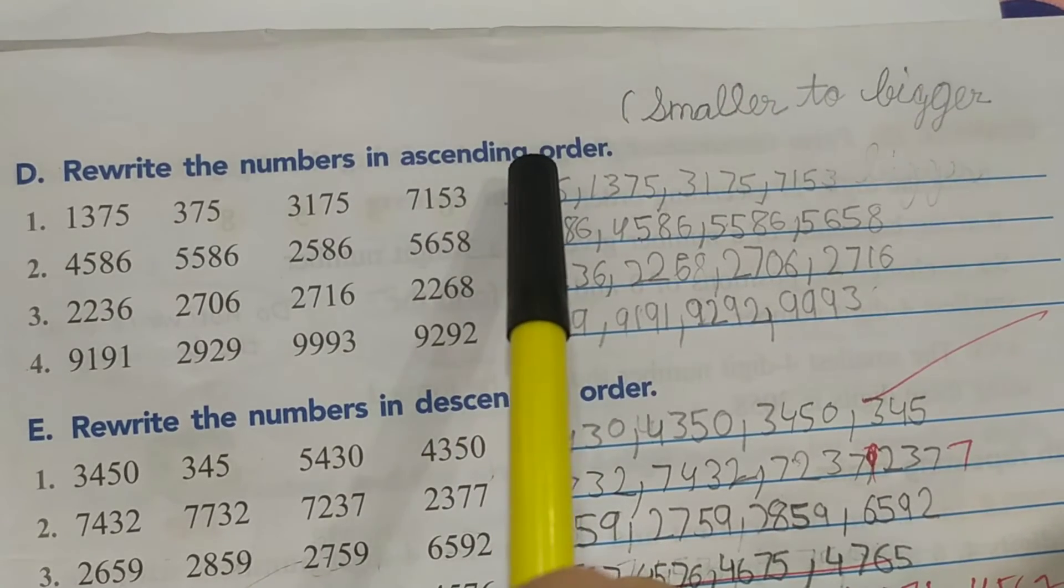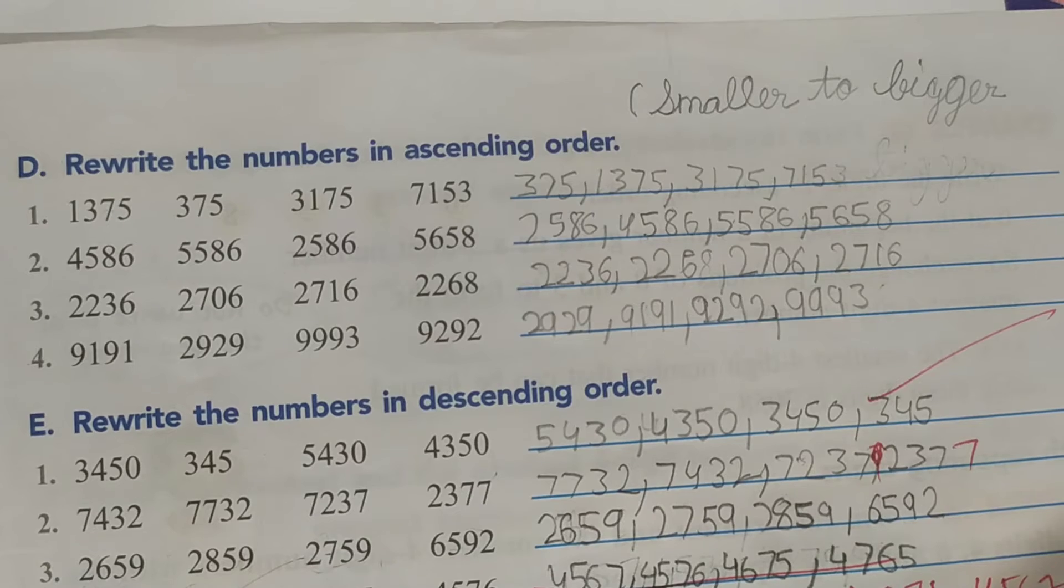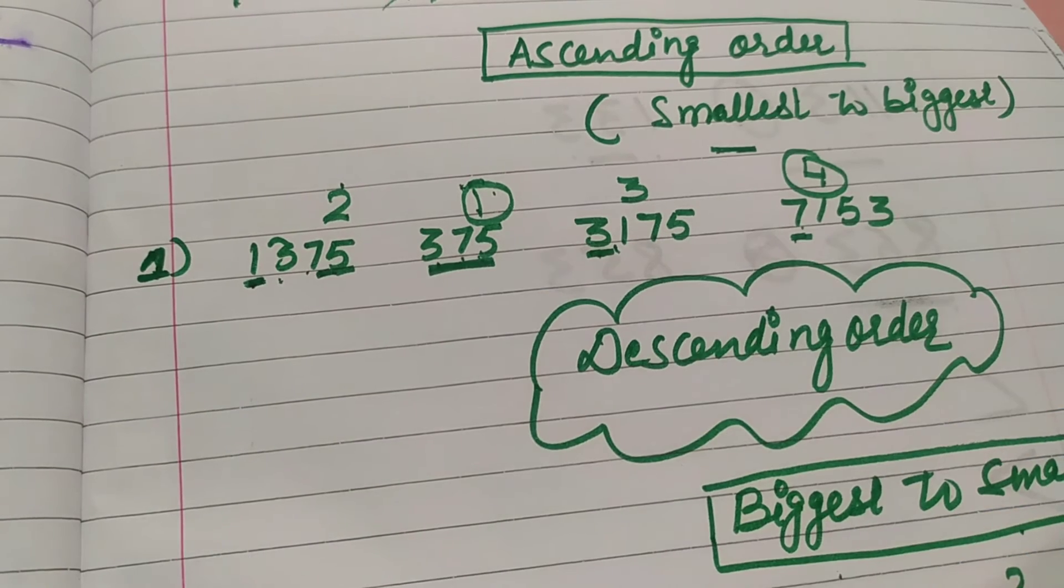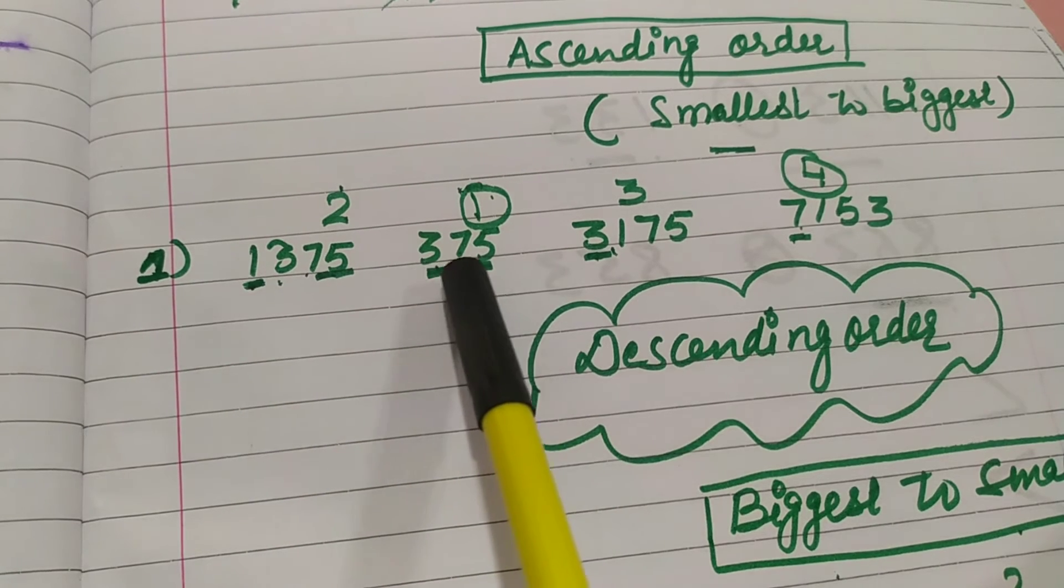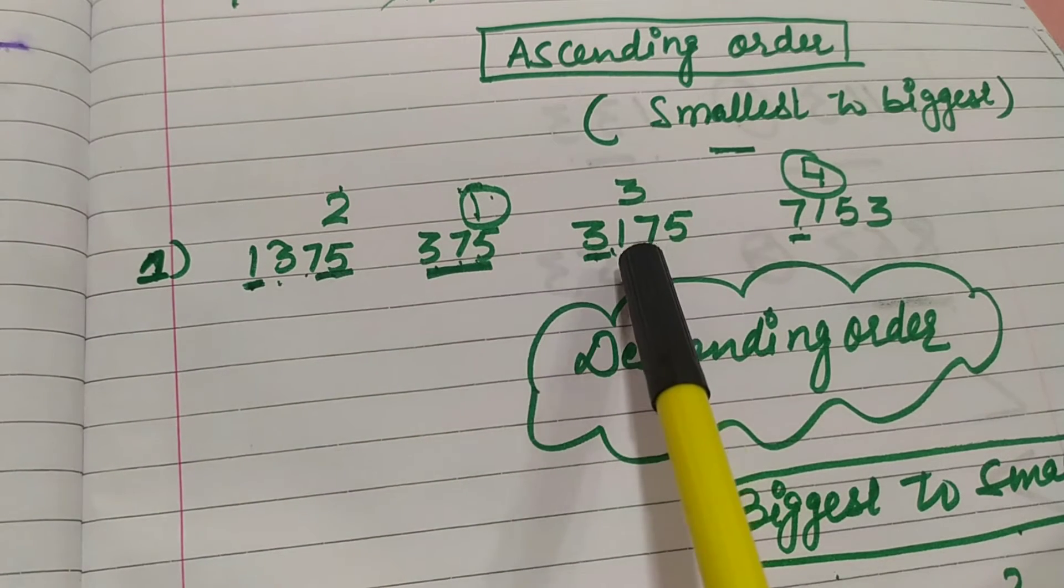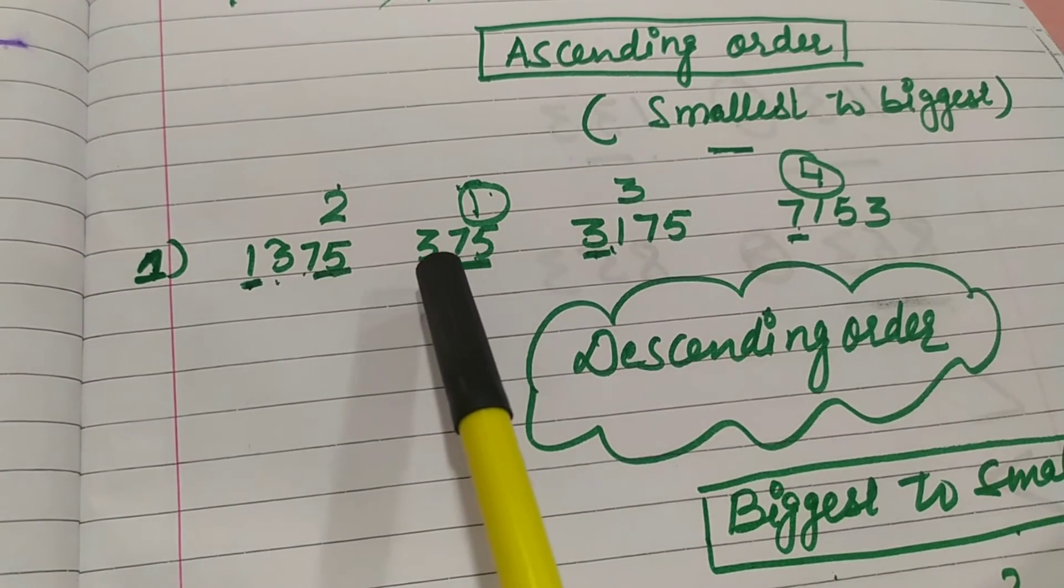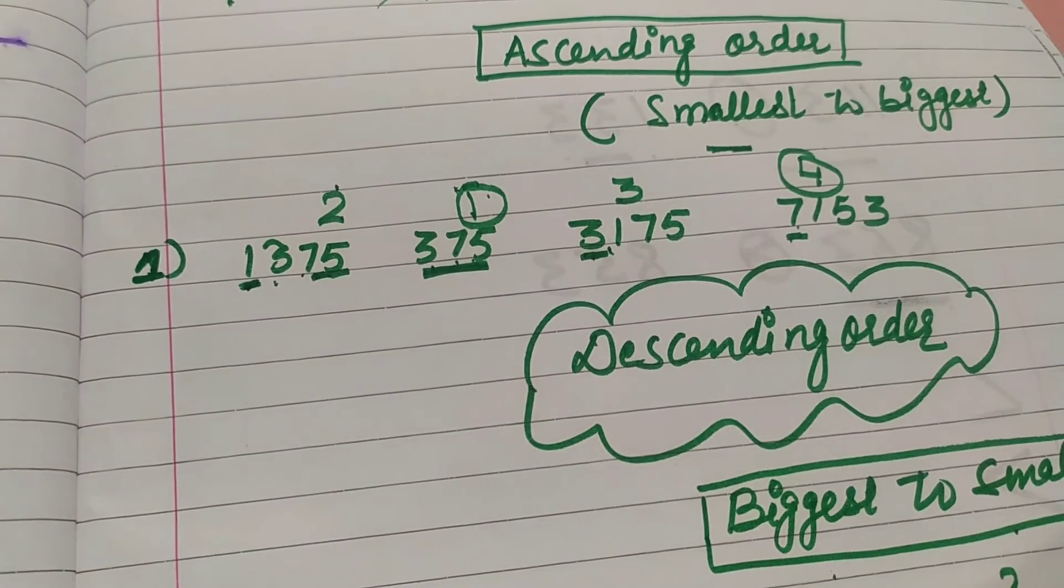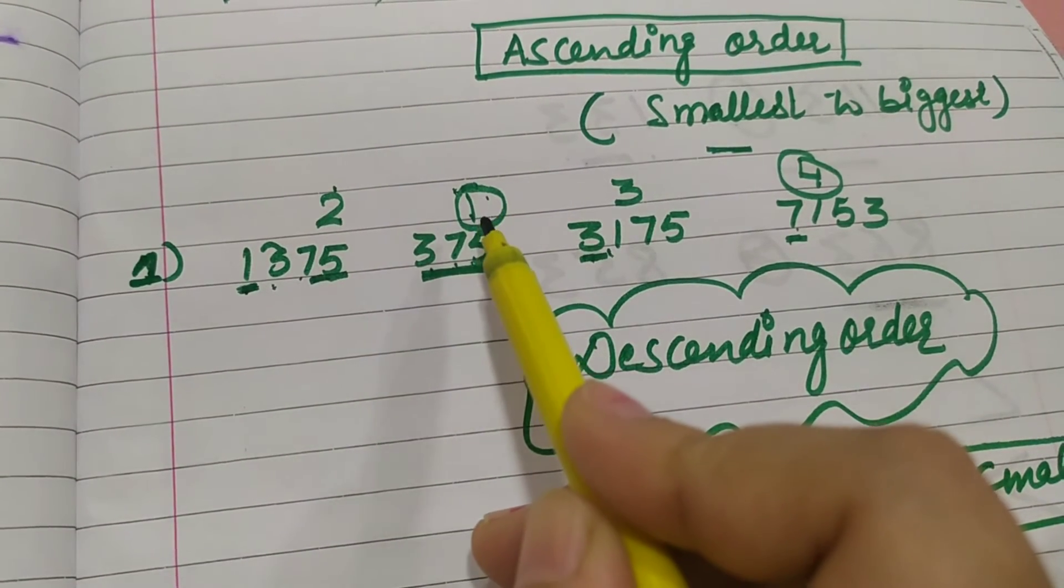So next one is rewrite the numbers in ascending order. Ascending order means we have to write the smaller number first and the biggest number at the end. 1,375, 375, 3175, 7153. This is 3 digit number and this is the smallest number. And this number will come in first position.